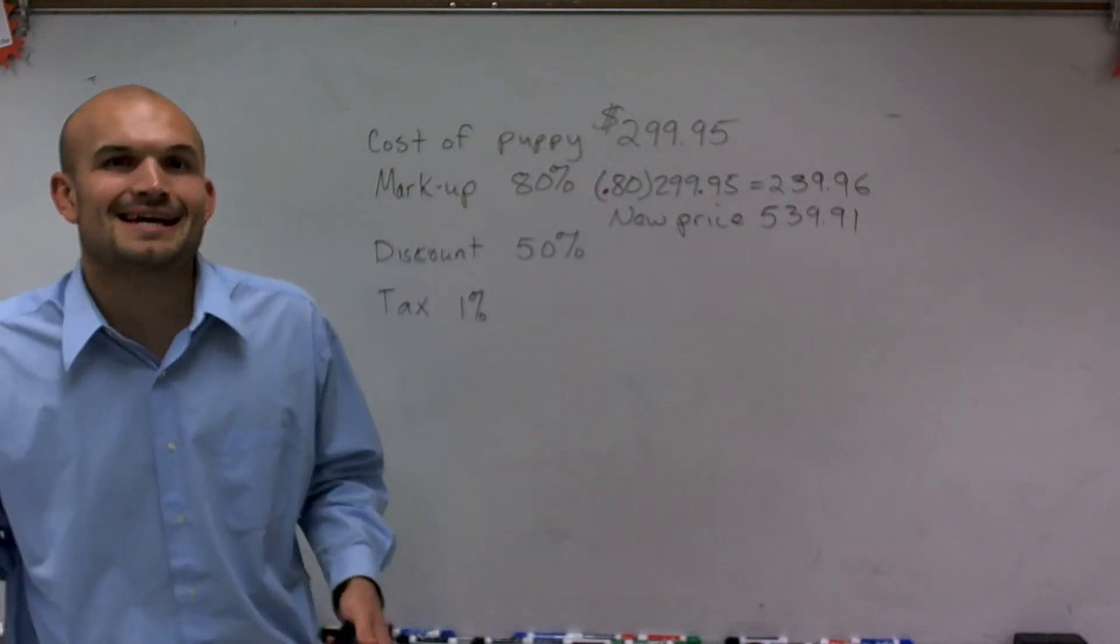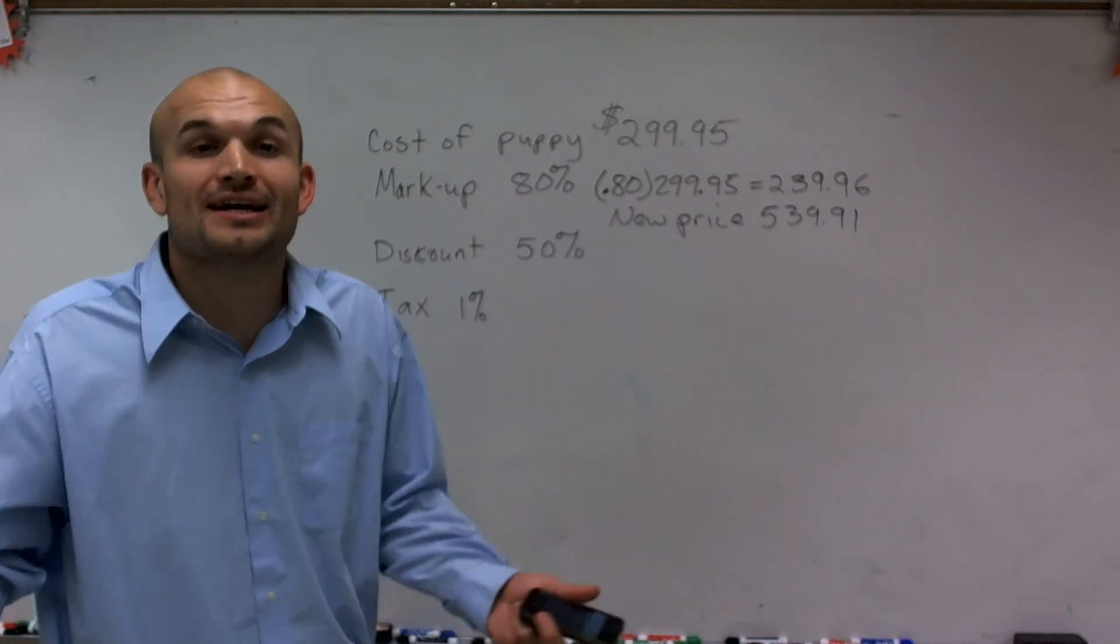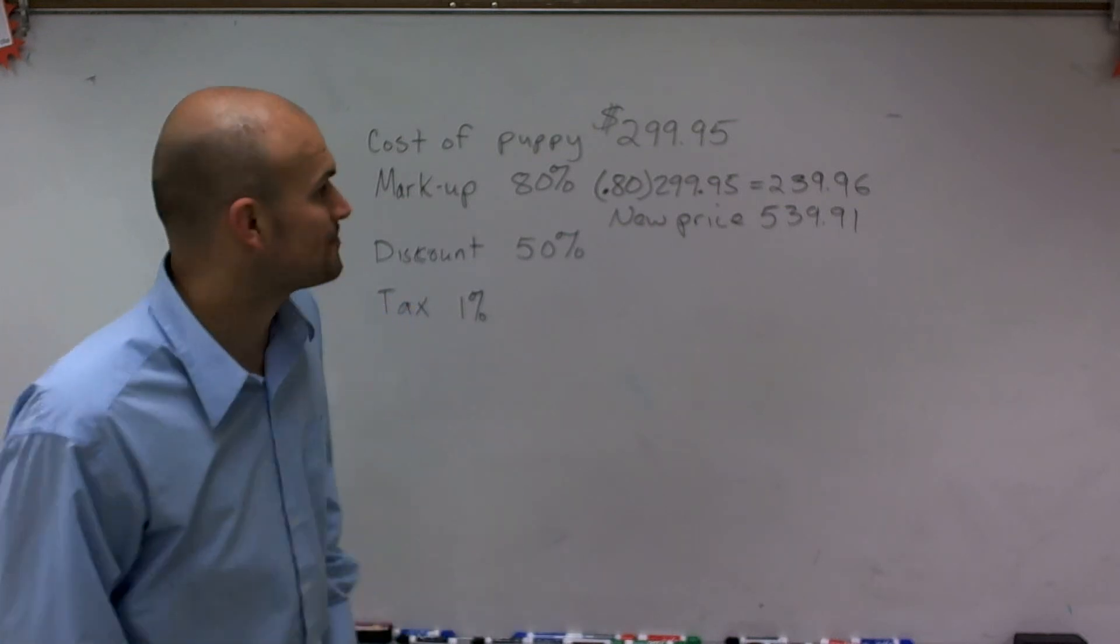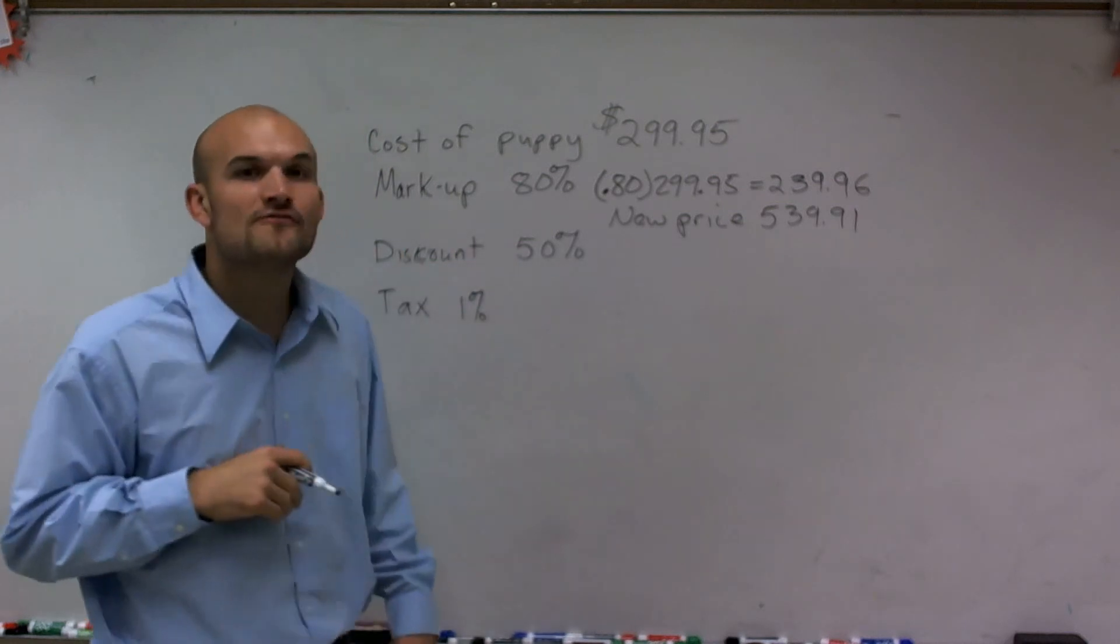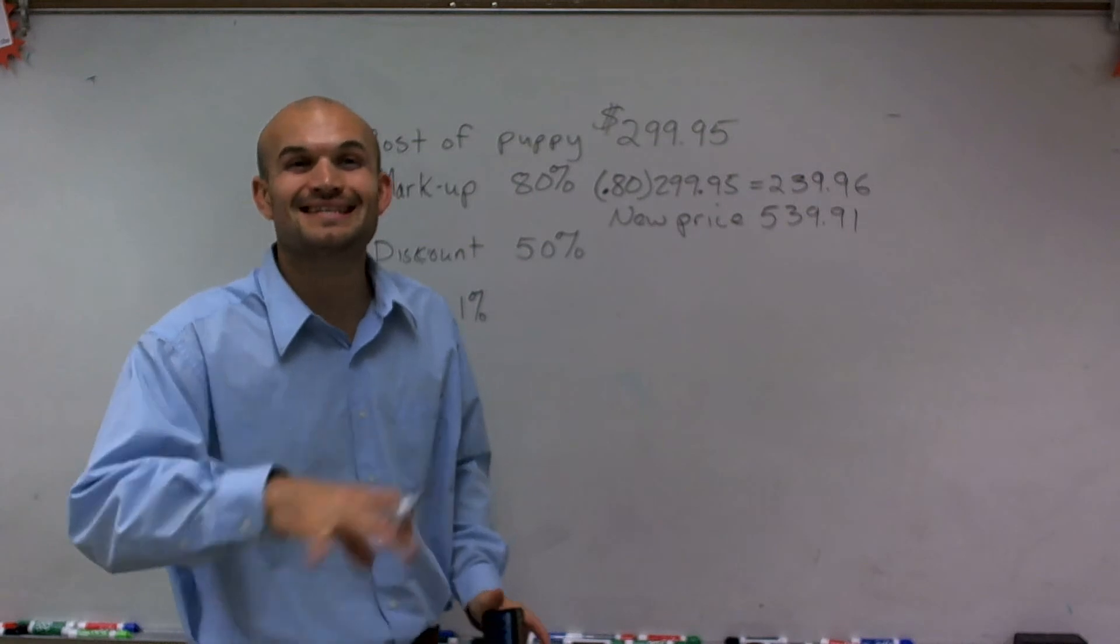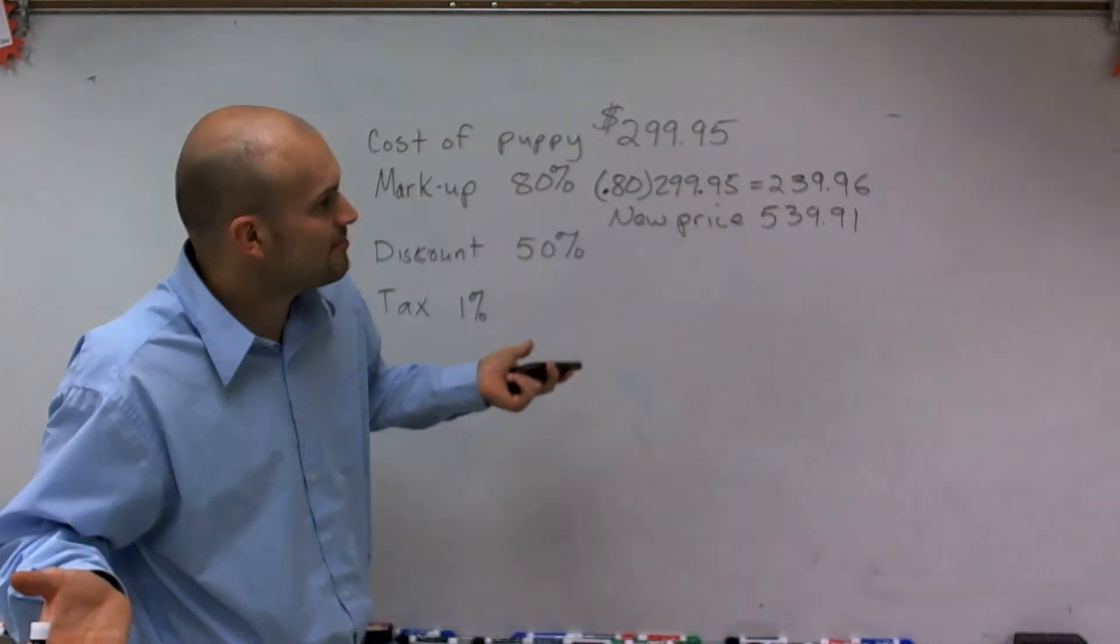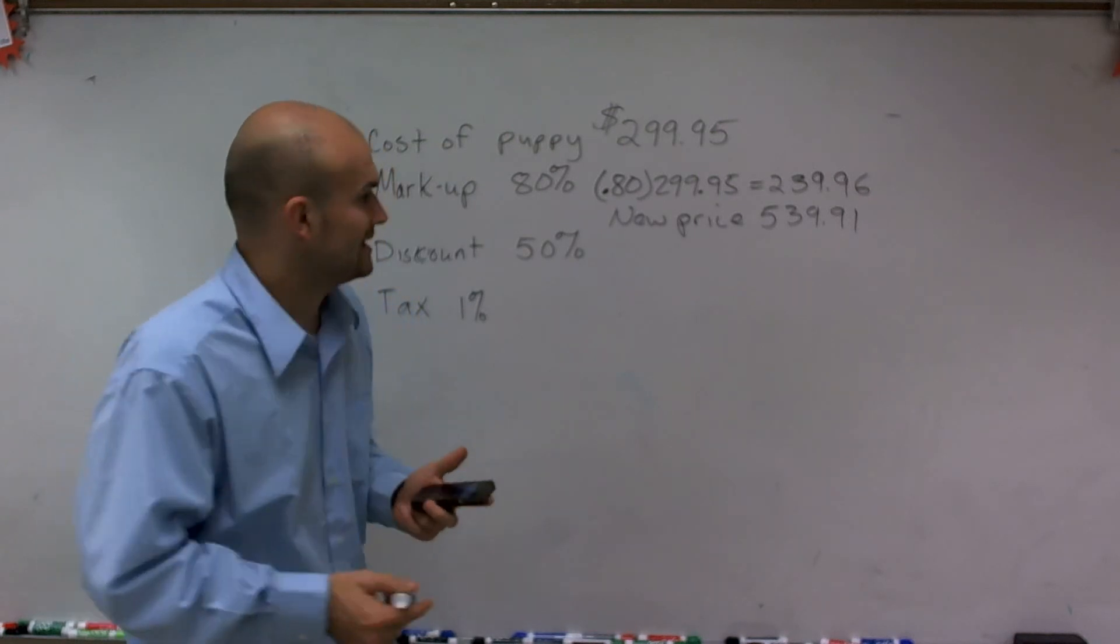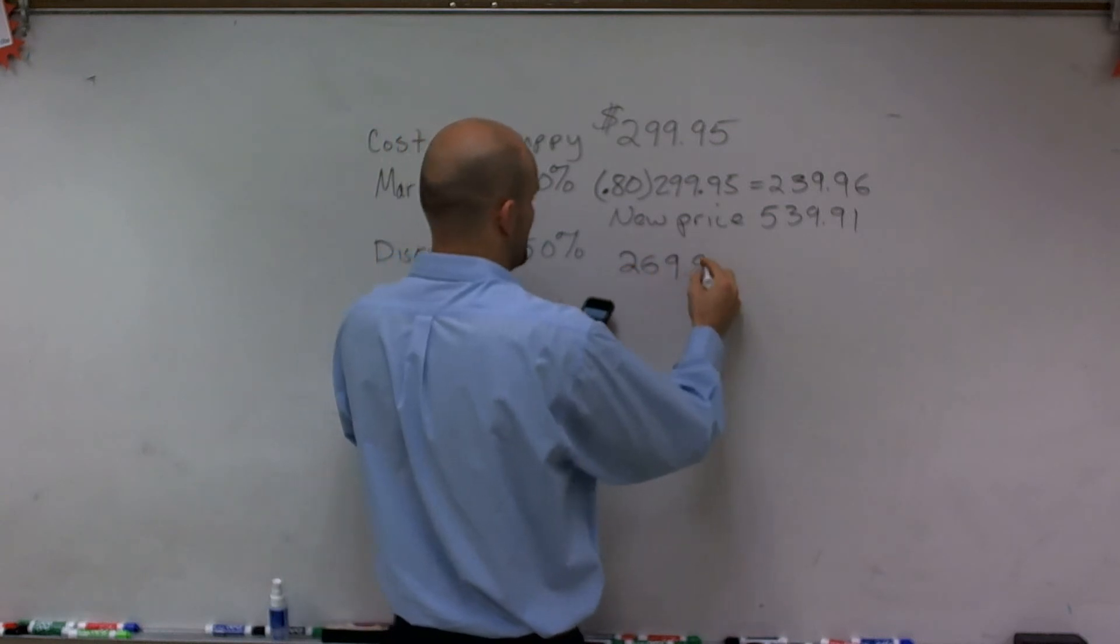Now, let's say they have too many of these puppies. So they got to make a quick sale over the weekend, right? One of those, if you buy now, you get this deals. So let's say for today only, they're going to give you a discount of 50%. Now it's already been marked up. And now they're going to take a discount of 50% of the new price. So you can just multiply by .50 or I could also just divide by two. And I'm going to get my new price is going to be $269.95.